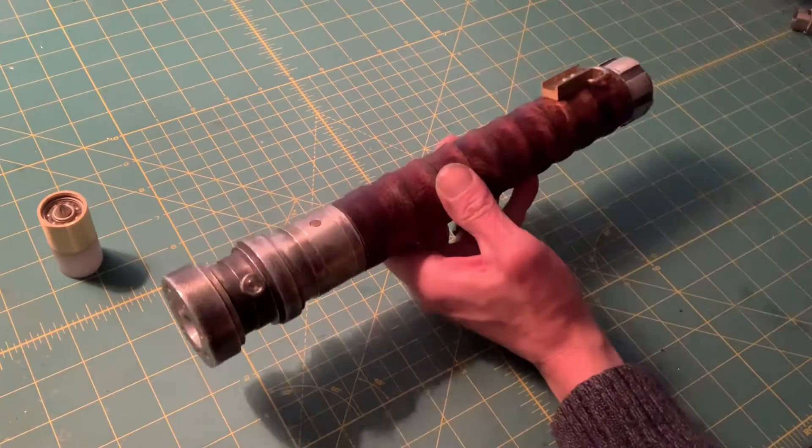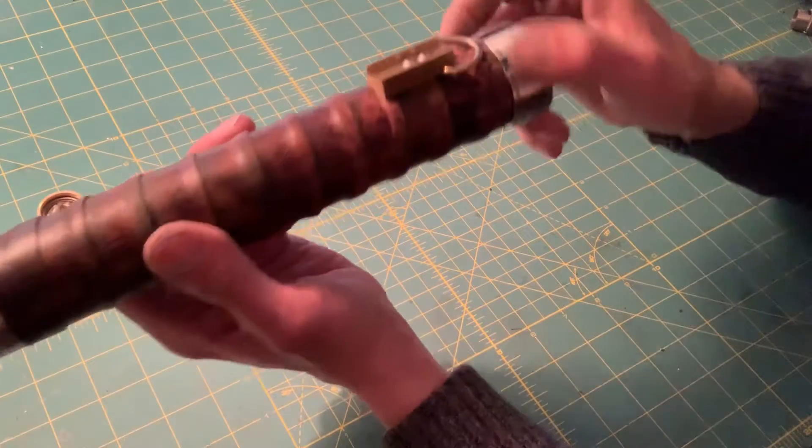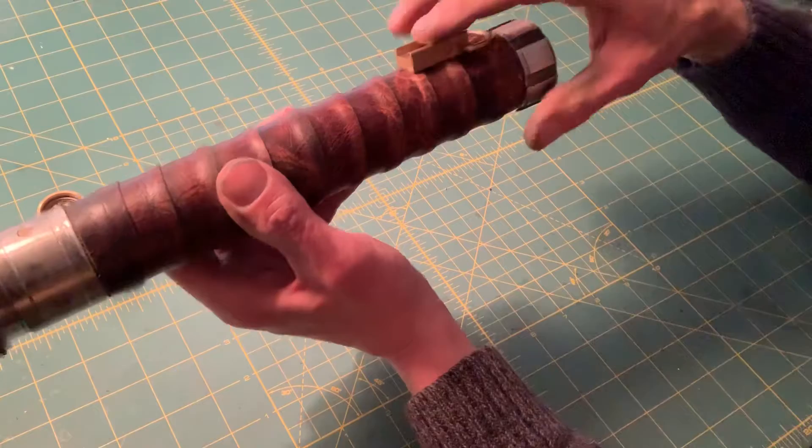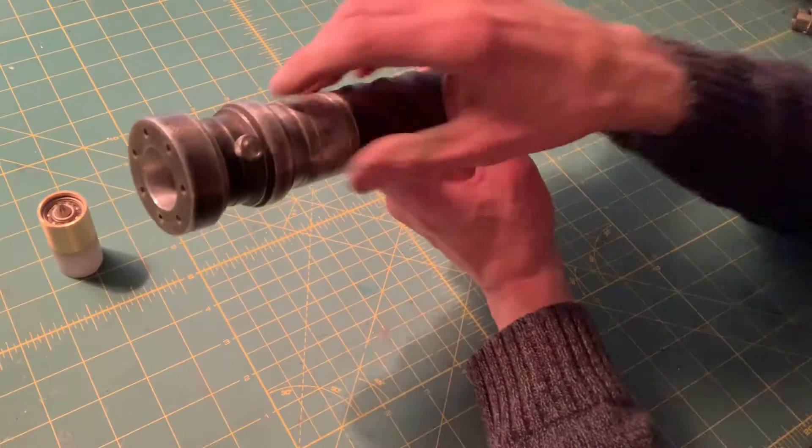There's the d-ring here that I carved out, there's a pommel that I carved out as well, switch box there, and the emitter that I made for this.